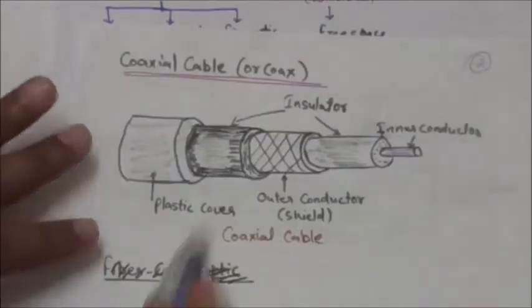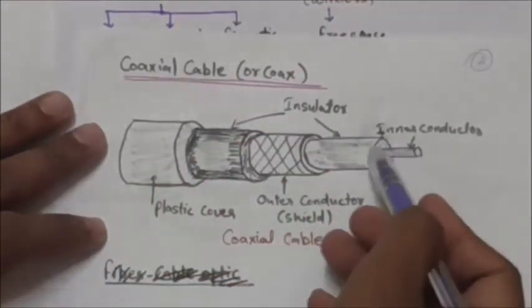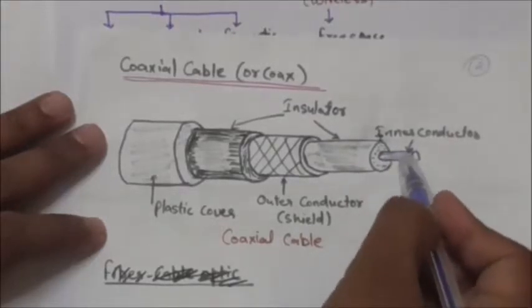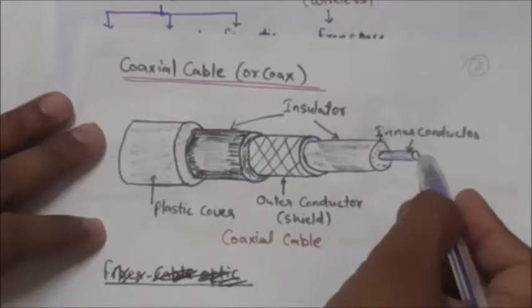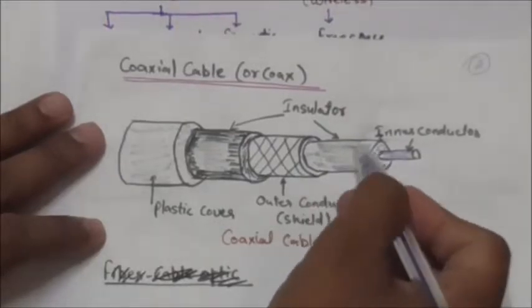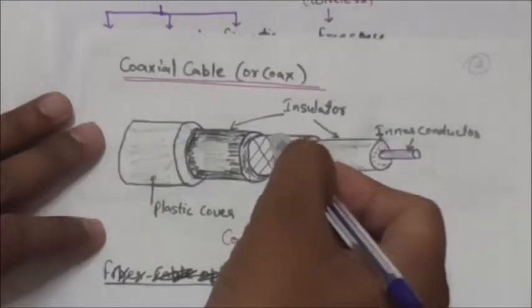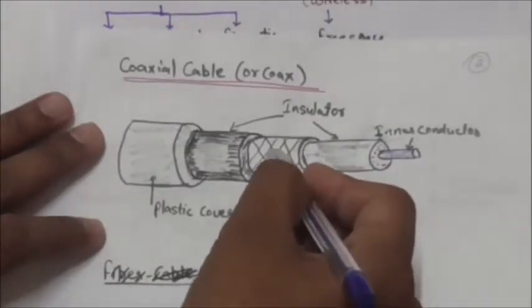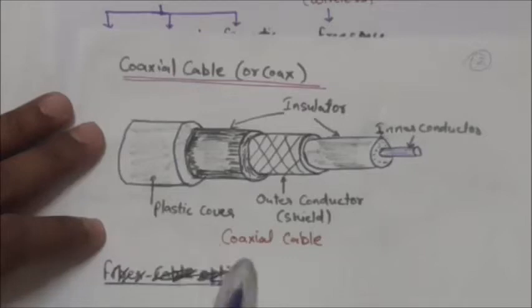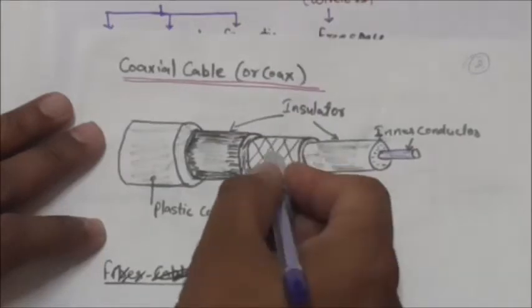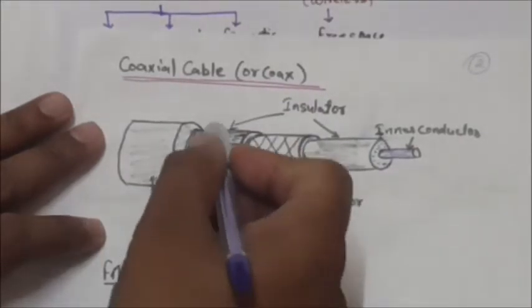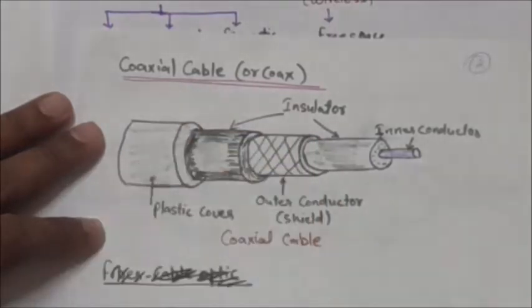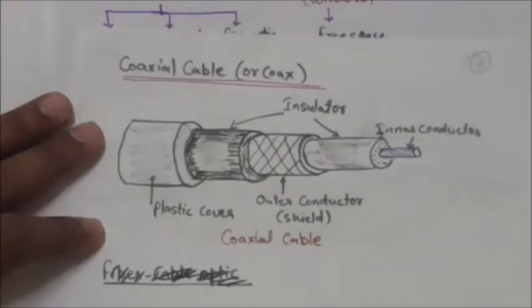Now we will study about coaxial cable, or coax. Coax has a central core conductor of solid or stranded wire, usually copper, enclosed in an insulating sheath, which in turn is enclosed in an outer conductor of metal foil, braid, or a combination of the two. This outer metallic wrapping serves both as a shield against noise and as the second conductor which completes the circuit. The outer conductor is also enclosed in an insulating sheath, and the whole cable is protected by a plastic cover. Coaxial cable carries signals of higher frequency ranges than those in twisted pair cable.